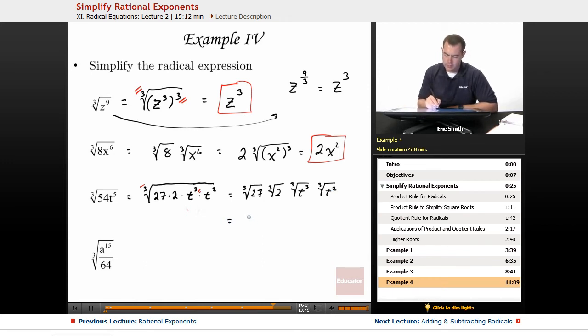The cubed root of 27 would be a 3, but the cubed root of 2 has to stay. The cubed root of t cubed is t, but then the cubed root of t squared, well that one has to stay.